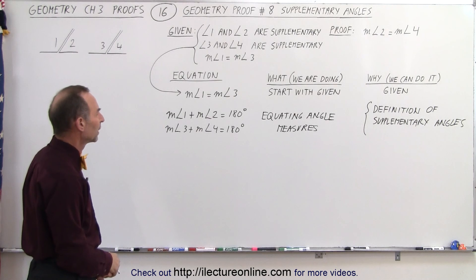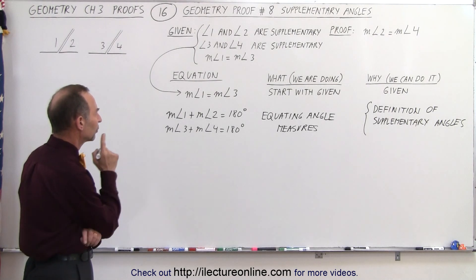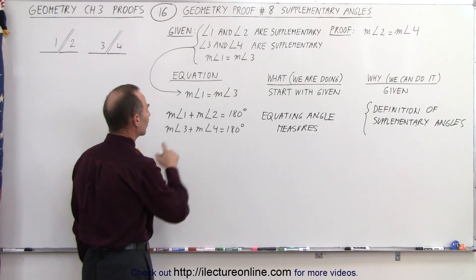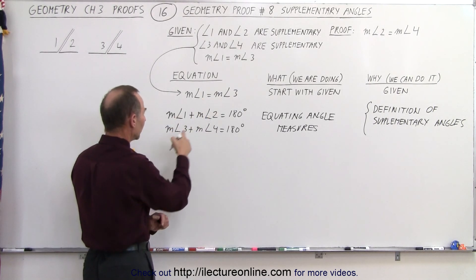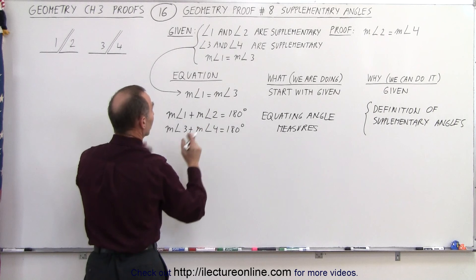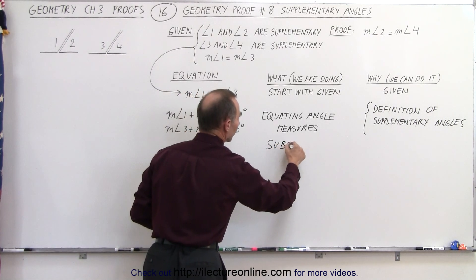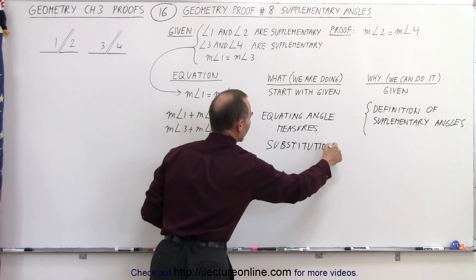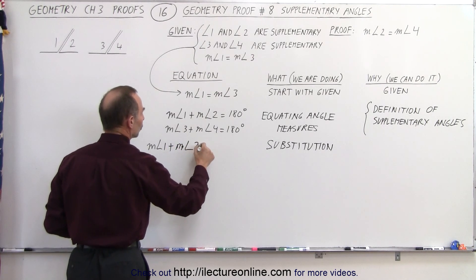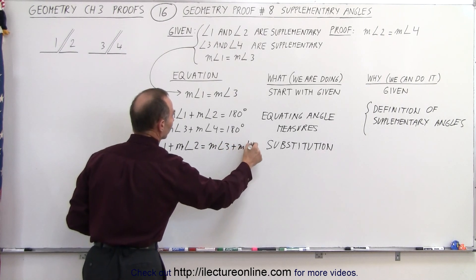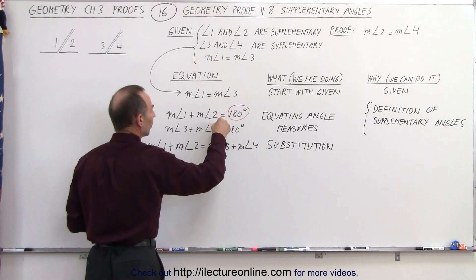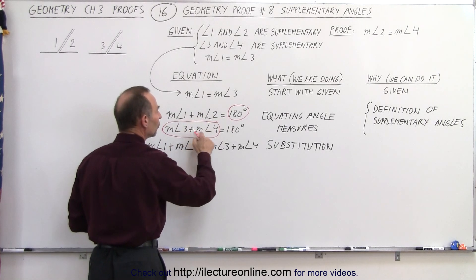Now that we've done that, we can say the measure of angle 1 plus the measure of angle 2 equals 180 degrees, and the same for angle 3 and angle 4. We can also say the measure of angle 1 equals the measure of angle 3, so we set these two equations equal to each other by making a substitution: the measure of angle 1 plus the measure of angle 2 equals the measure of angle 3 plus the measure of angle 4.